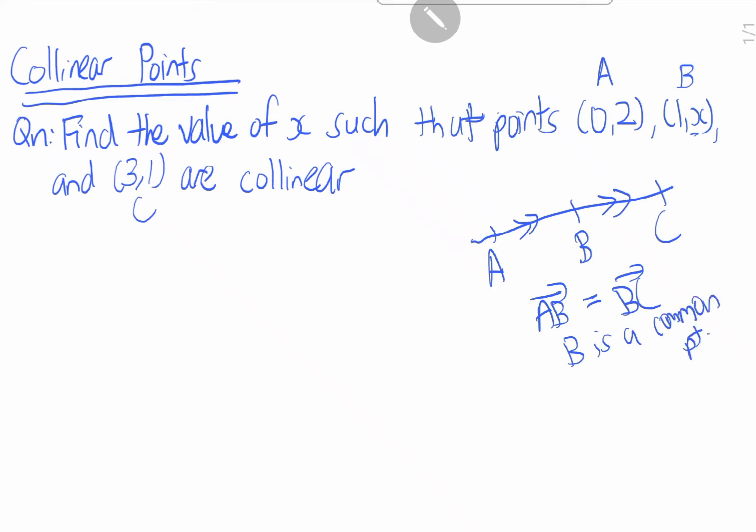So now let's start off. This means that AB is a scalar multiple of BC. In other words, AB equals to k times BC, where k is a scalar number like 1, 2, or 3.